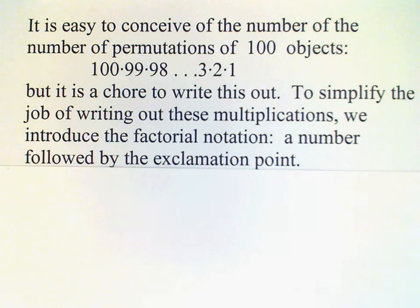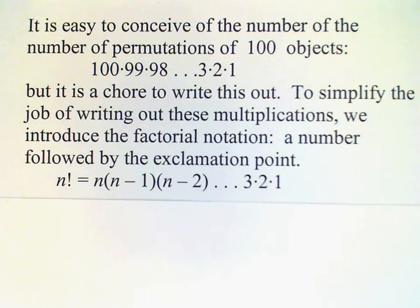Basically, a number followed by an exclamation point is taken to mean that you start with that number, multiply by one less than two less and so on, all the way down to three times two times one.